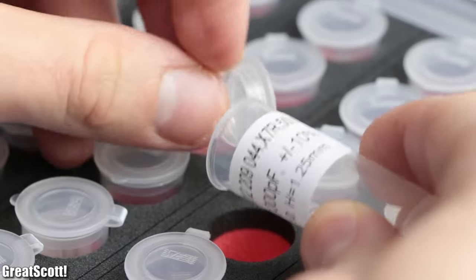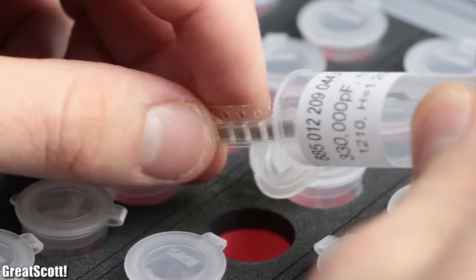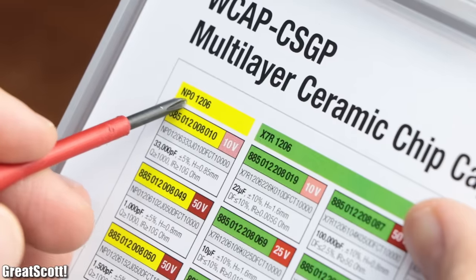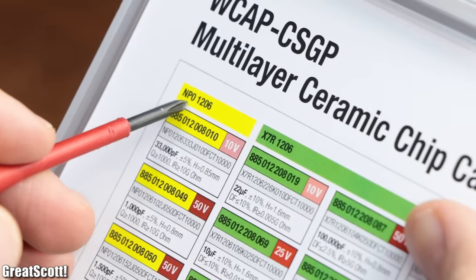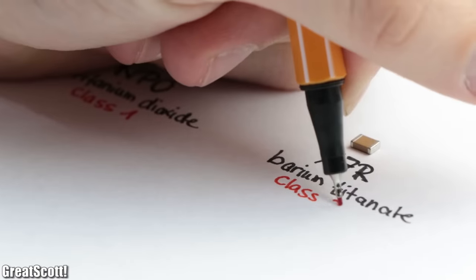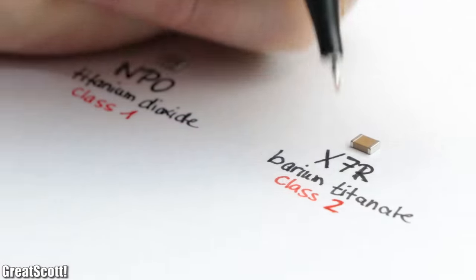But we should not forget about our super tiny ceramic SMD capacitors, for which there apparently exist different classes, like NP0 and X7R. In a nutshell, those two kinds feature a different base material.